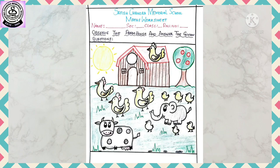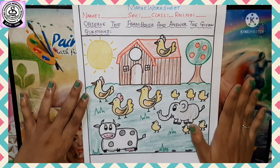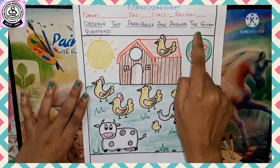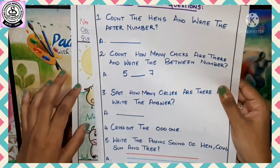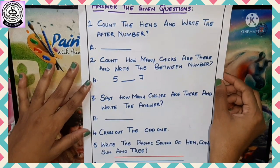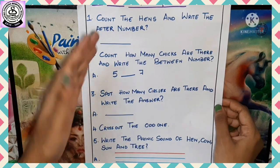This is our worksheet. As you all know, this is a farmhouse, and in a farmhouse we have domestic animals. Today we are going to do a worksheet on critical thinking, and here are the questions. There are five questions. We have to observe the farmhouse and answer the given questions. How many questions are there? One, two, three, four, and five.